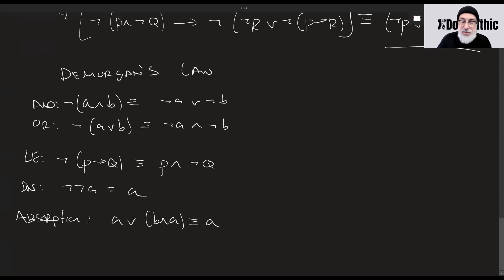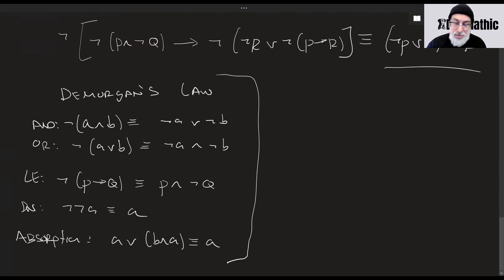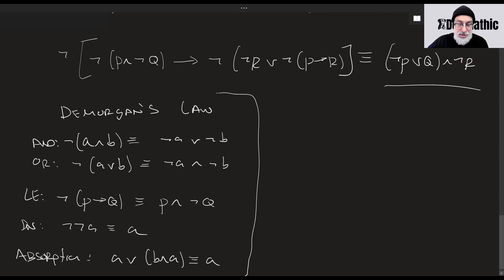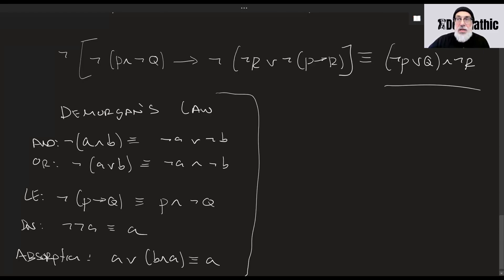Anytime we have these sorts of symbolic logic problems, we're always going to use some laws or identities — and it makes life much easier. This type of simplification would typically be found in a discrete mathematics course — generally it's the first month of any undergraduate college-level discrete math course: logic, truth tables, inferences, all that stuff. Let me know what you think if you want to see more. Have a good night.